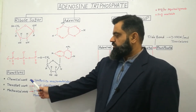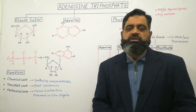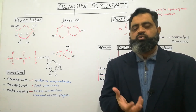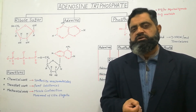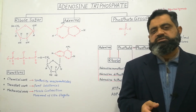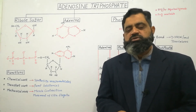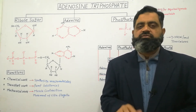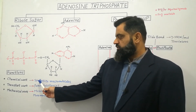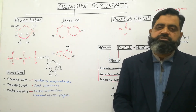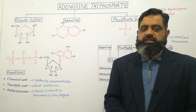Now we are going to discuss some important functions of ATP. The first function is chemical work. There are different molecules required to build our body — carbohydrates, lipids, and proteins — to synthesize enzymes, proteins, and hormones. To synthesize these macromolecules in our body, we need energy in the form of ATP, and this energy comes from the ATP molecule.